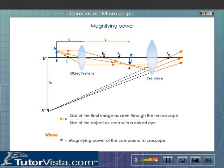The magnifying power of the compound microscope is defined as the ratio of the size of the final image as seen through the microscope to the size of the object as seen with the naked eye.